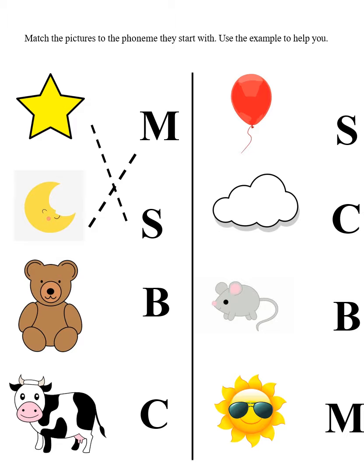Next, we have bear. B-b-bear. Does bear have the b-b-b sound or the c-c-c sound? Did I hear you say b-b-b? Excellent. And the last one. Cow. C-c-cow. Does it have the c-c-c sound? Yes. Very good.